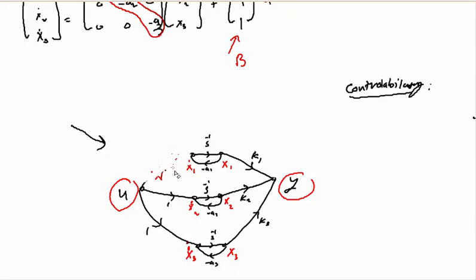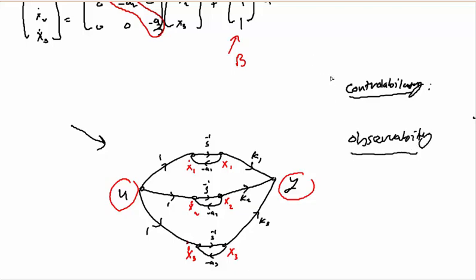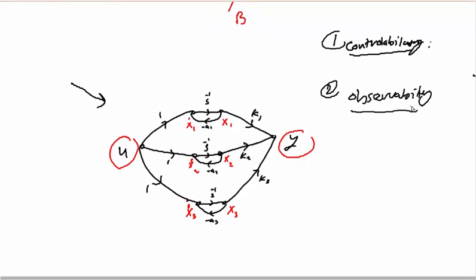It's the same for observability. Let's talk a little about observability. Observability is a very important property, along with controllability, in control systems. Observability is about how the output y is observing these states.